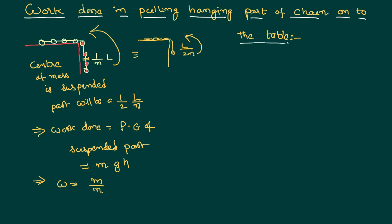So mass of the suspended part will be total mass by 1/n of the chain. That part will have that much of the mass times g. h is the location where the center of mass is available. We know we have just now explained that center of mass is at a height of total length divided by 2n.